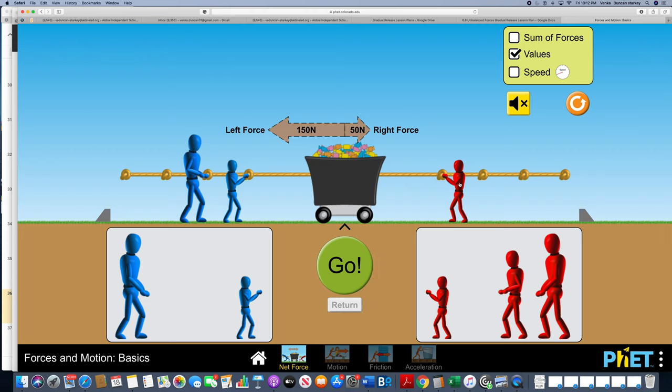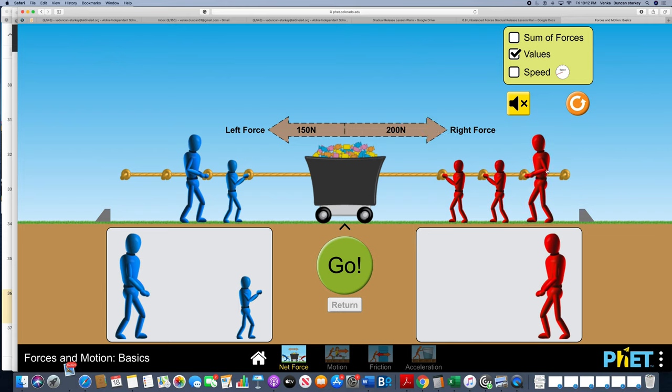This player has a force of 50 newtons. The second player has an additional 50 newtons of force. And the third player adds an additional 100 newtons of force for a combined force of 200 newtons. Now let's press go and see which way the tug-of-war moves.